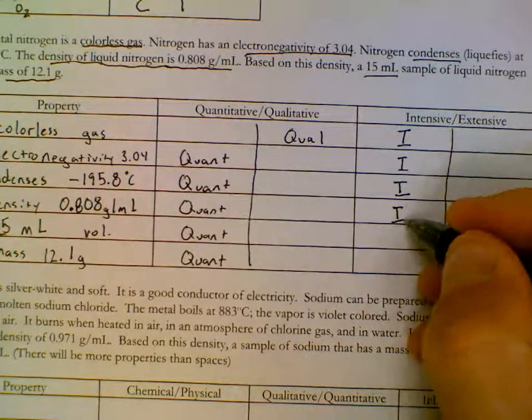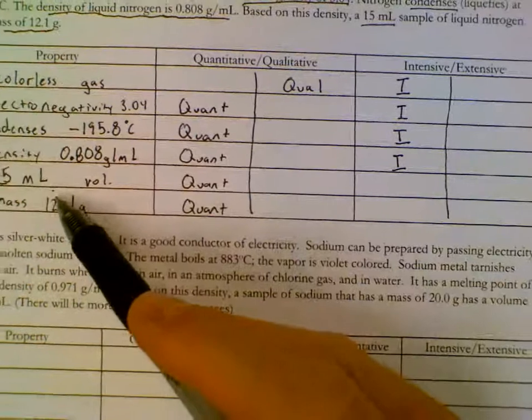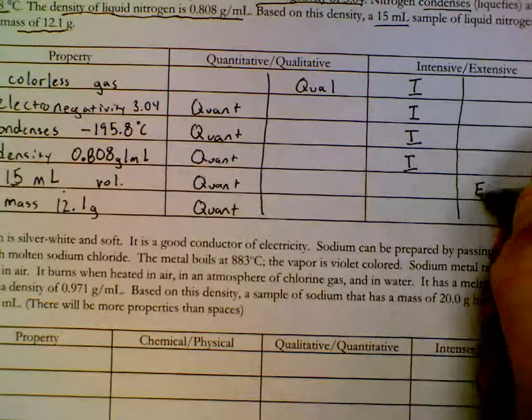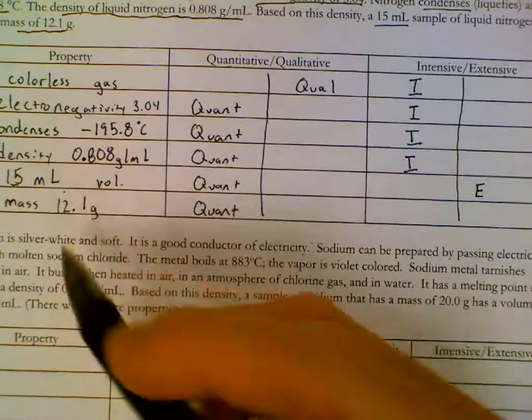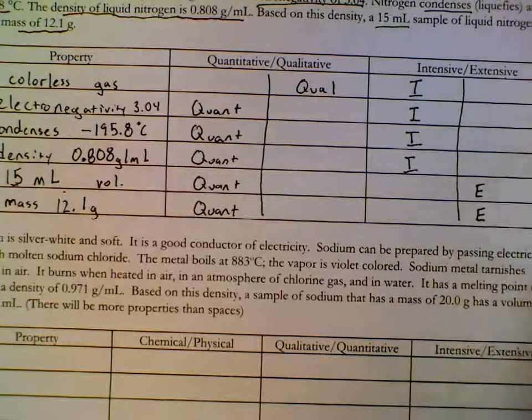Density is intensive. And then 15 milliliters. If we were to change our amount that we had, that would change its volume. That's extensive. If we were to change the amount we had for its mass, that would also change the number. It's also extensive.